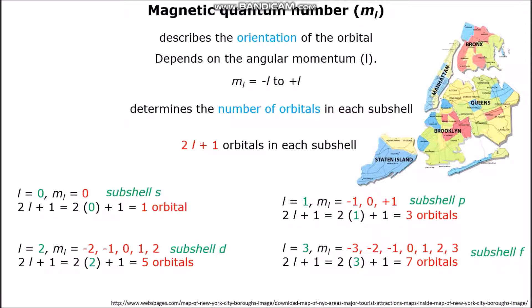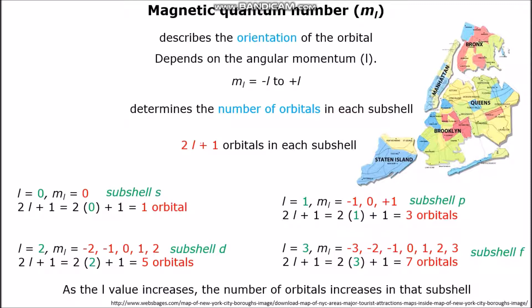Here I hope you see a pattern. As the L value increases, the number of orbitals increases in that sub-shell. So there is 1 orbital in sub-shell S, 3 orbitals in sub-shell P, 5 orbitals in sub-shell D, and 7 orbitals in sub-shell F.